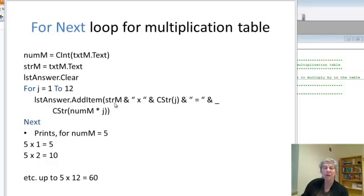And what does it look like? I print my number as a string. Here's my ampersand. I print x, meaning multiplication times. I print my j as a string, I print the equal sign, and then continue to the next line. I actually figure out what the numerical version times j equals, convert that to a string and print that.